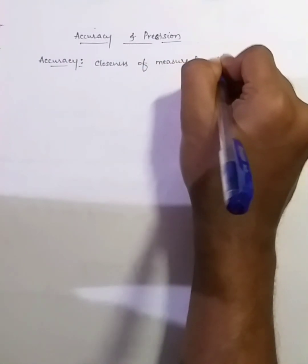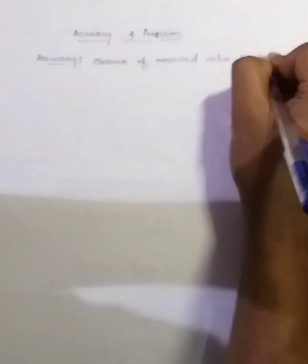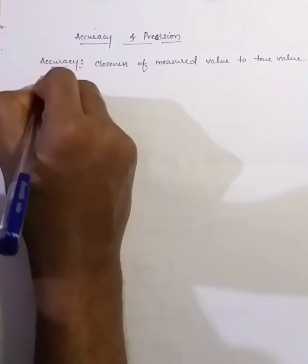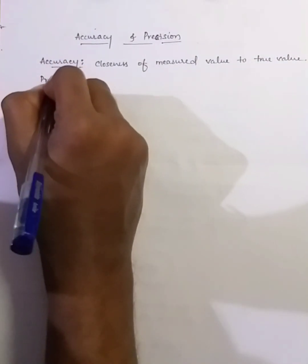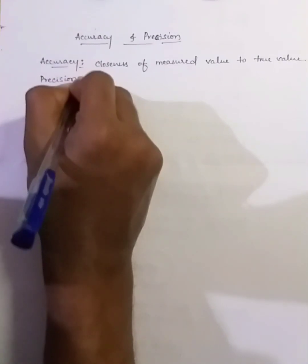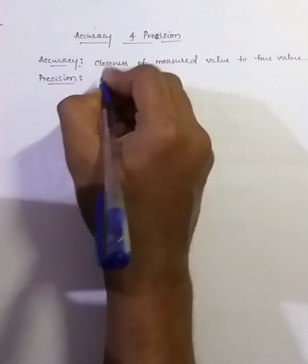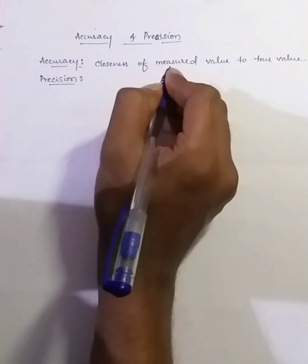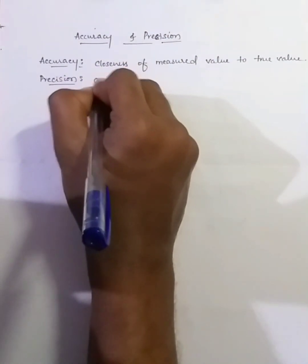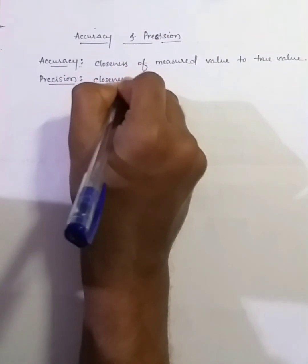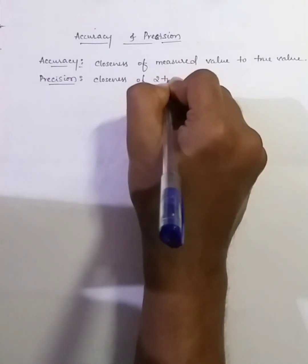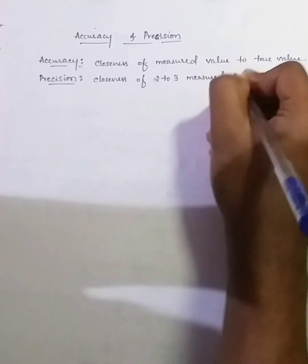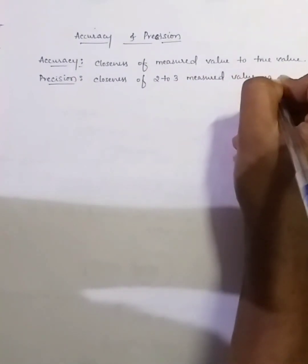Precision is the closeness of two or three measured values with each other.